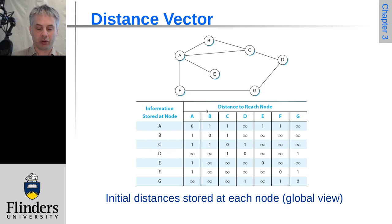Each of the nodes doesn't have all of this information initially. This is just us looking in from the outside saying, this is the information that A will have, this is the information that B will have, this is the information that C will have, and so on.